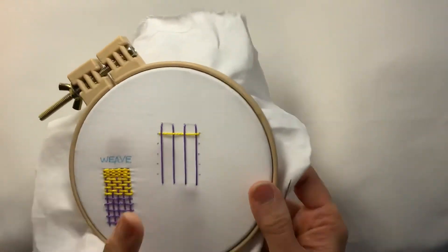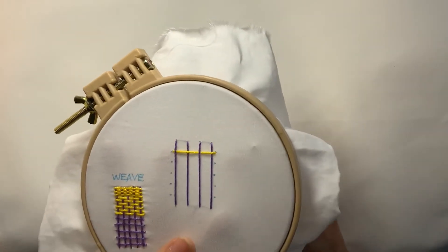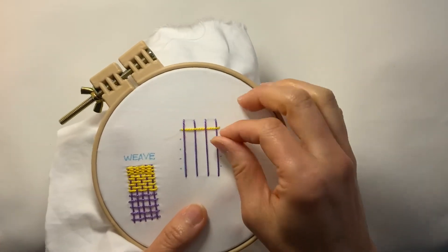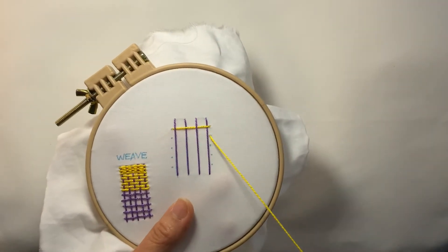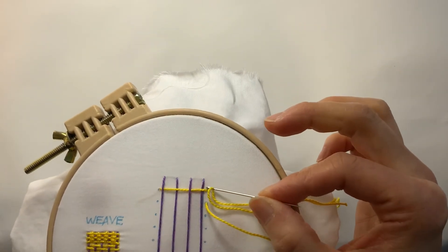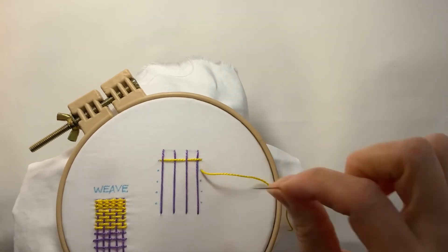And again, I'm going to keep turning my hoop back and forth, rotating it back and forth, so that it's comfortable for me to weave right to left. So I come back up now on this side. And because I ended with an over stitch, I'm going to start with an under stitch.